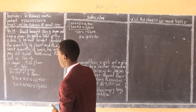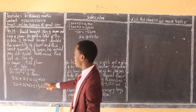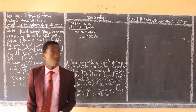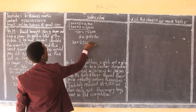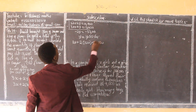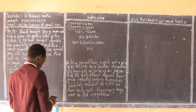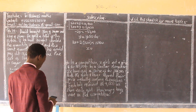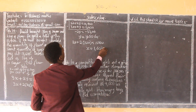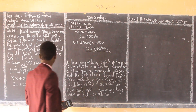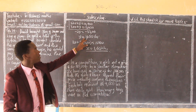So the cost of one kilogram of flour is one thousand six hundred shillings. To find the cost of sugar, I substitute y = 1,600 into the first equation: 3x + 2(1,600) = 10,400. Solving gives x = 3,600. So the cost of sugar is three thousand six hundred shillings and flour is one thousand six hundred shillings.